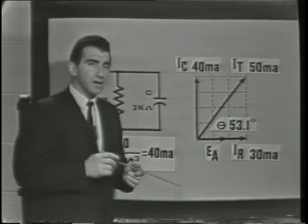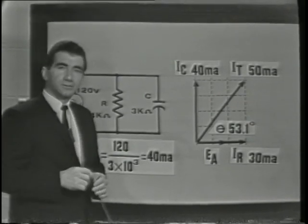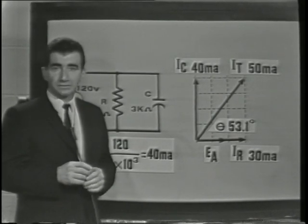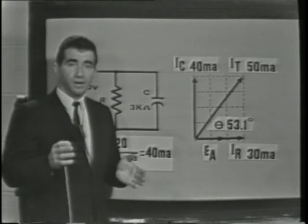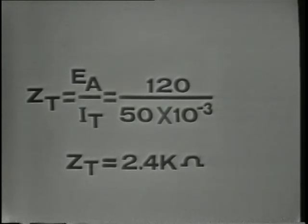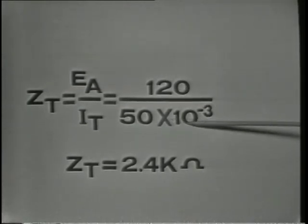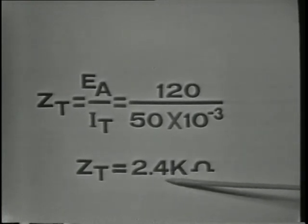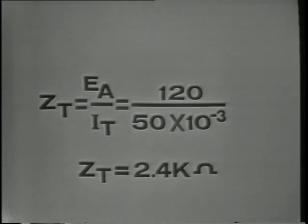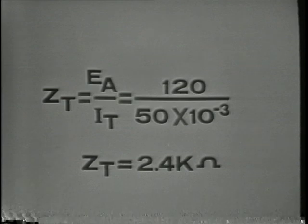Impedance vectors are not used in this parallel circuit because a series equivalent would first have to be developed, and for our purposes it's much simpler just to apply Ohm's law. When we apply Ohm's law, ZT is equal to EA over IT, or 120 volts over 50 milliamps, and the total impedance in the circuit is equal to 2.4 K ohms. And as in all parallel circuits, the total impedance is less than the smallest impedance in the circuit.